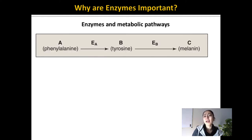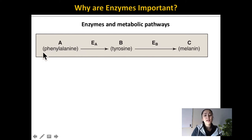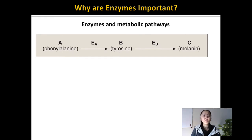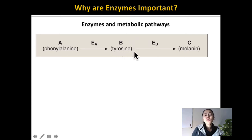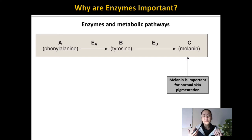Let's look at what can happen if your body doesn't produce a certain enzyme. In this metabolic pathway, we have phenylalanine, a type of amino acid. Our body can convert phenylalanine into tyrosine, another type of amino acid. Remember, amino acids are building blocks for proteins. Our body can therefore use tyrosine to actually build a protein called melanin, which is the molecule that gives our skin its normal pigmentation.